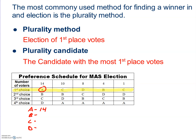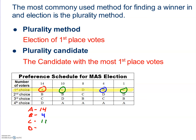Candidate B: candidate B has four first place votes and doesn't have any other ballot where they're listed first, so candidate B has a total of four first place votes. Candidate C is a little tricky because candidate C is in first place in one column, and also in first place in another column — 10 plus 1 — for a total of 11 first place votes.